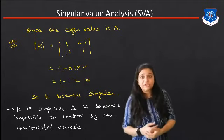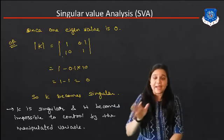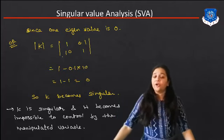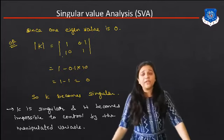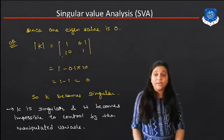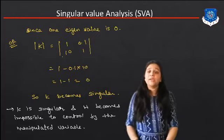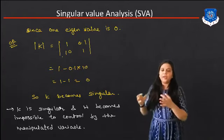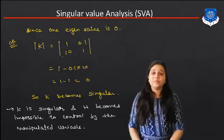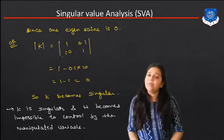So K is singular, which means it becomes impossible to control by the manipulated variable. Using MATLAB software, you can continuously check the value of steady-state gain, input variable, output variable, control variable, and manipulated variable. You can check the pairing of the system and find the best solution for this particular control system using MATLAB software.